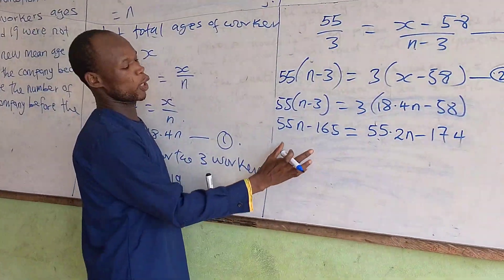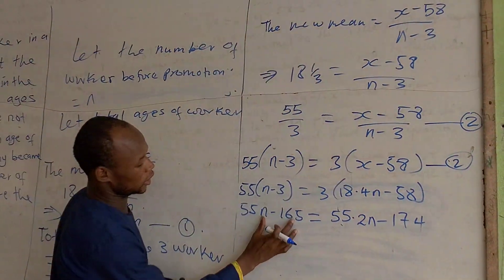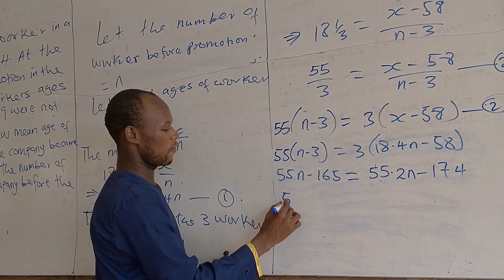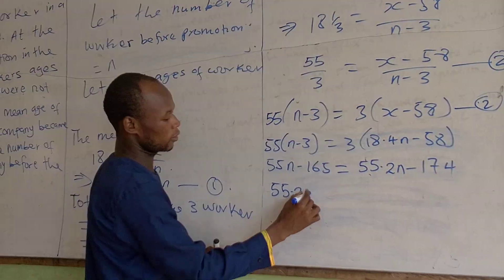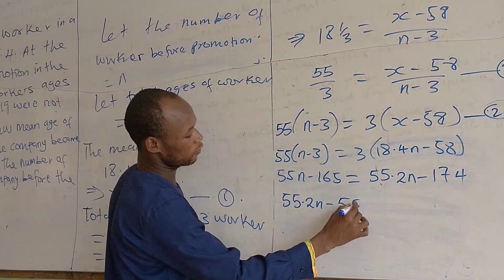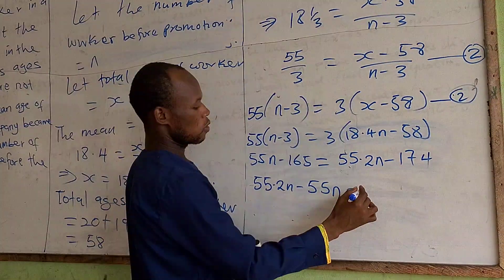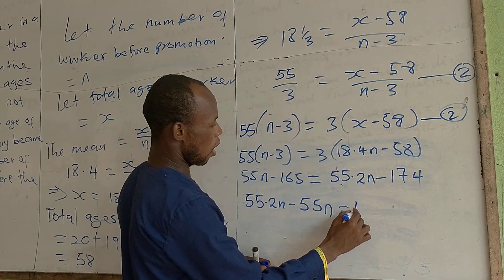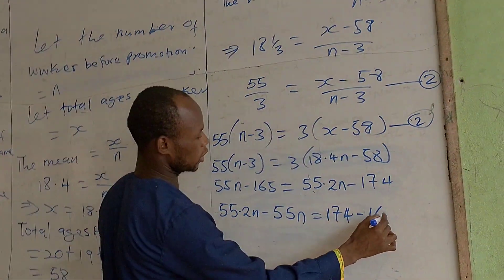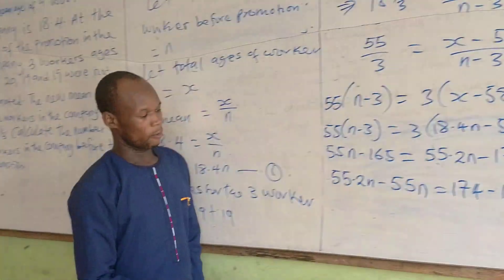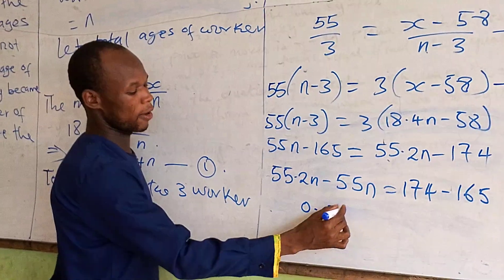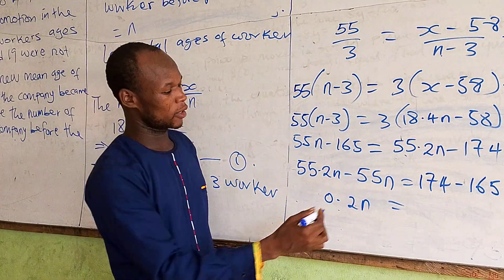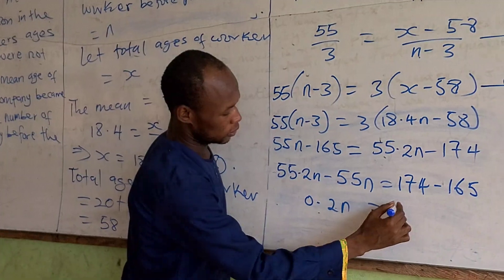So at this stage we group like terms. So we can decide to maintain this and take this to this side. So I have 55.2n minus 55n equal to 174 minus 165. Now the result here will give me 0.2n equal to 9.